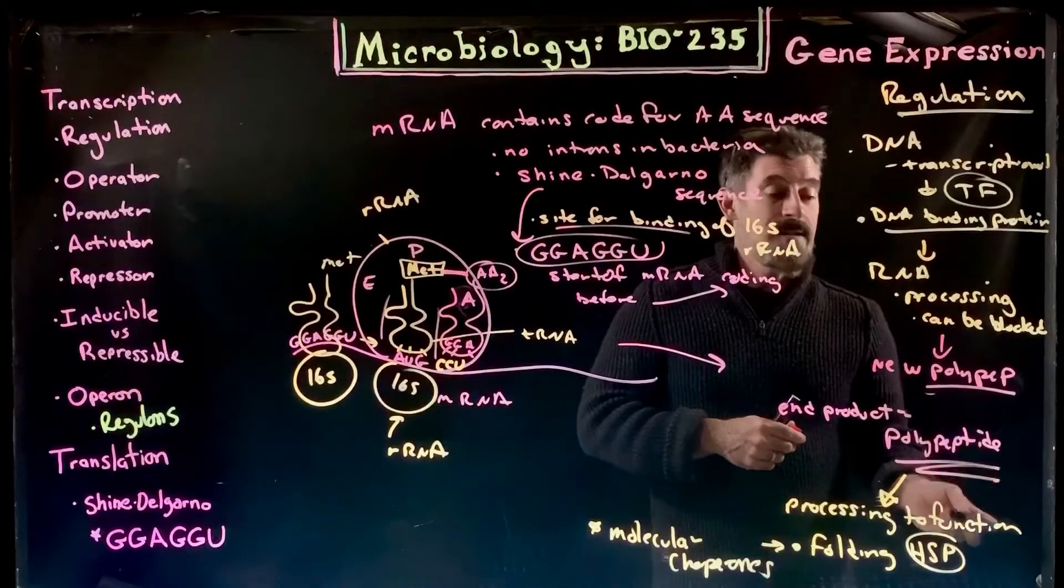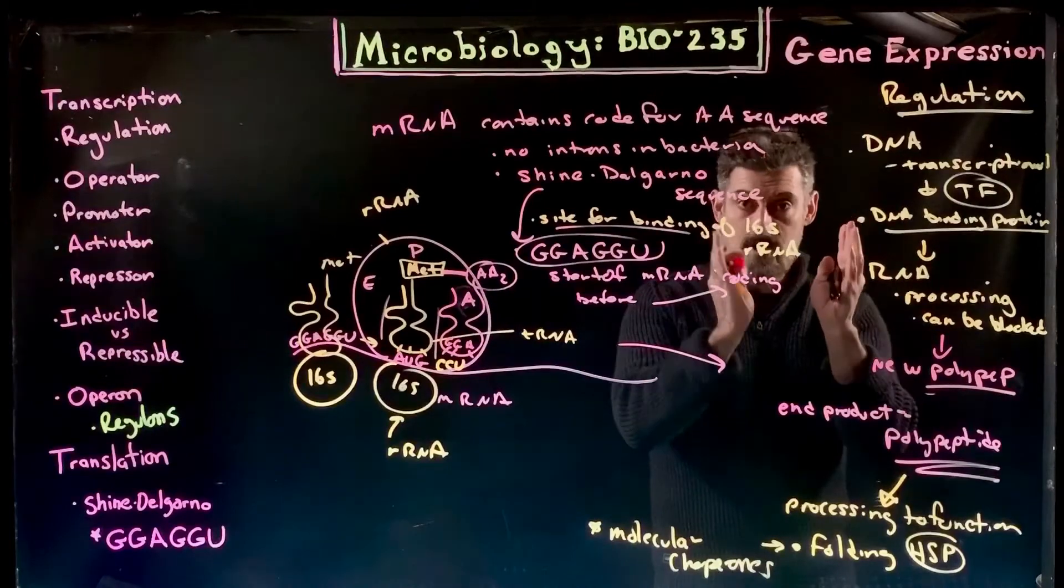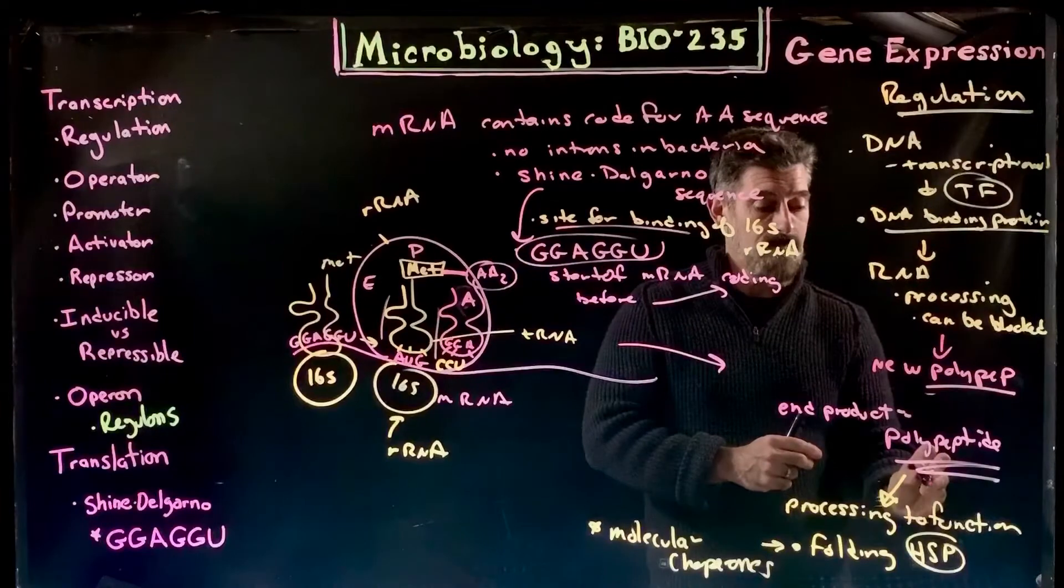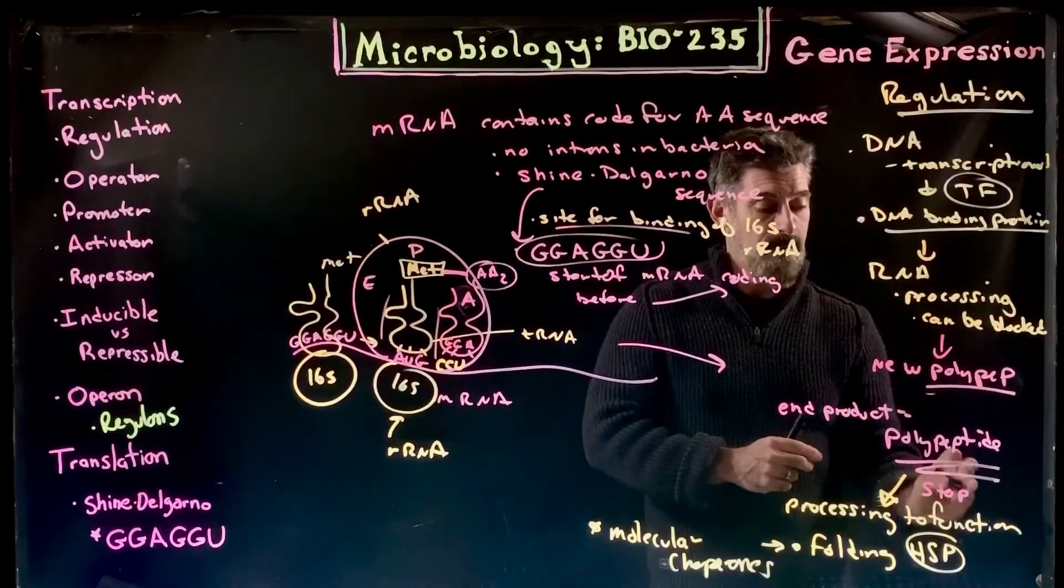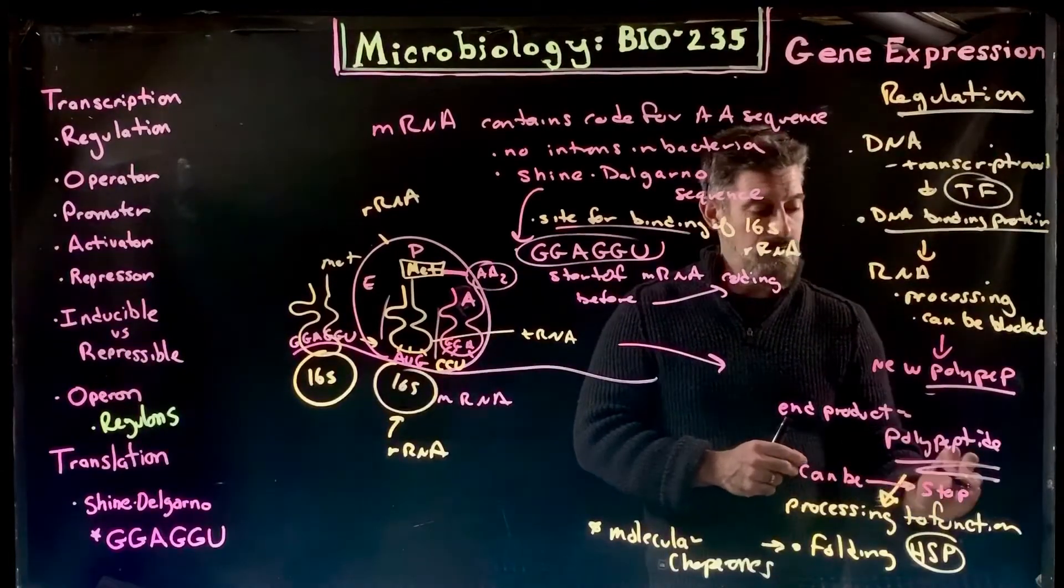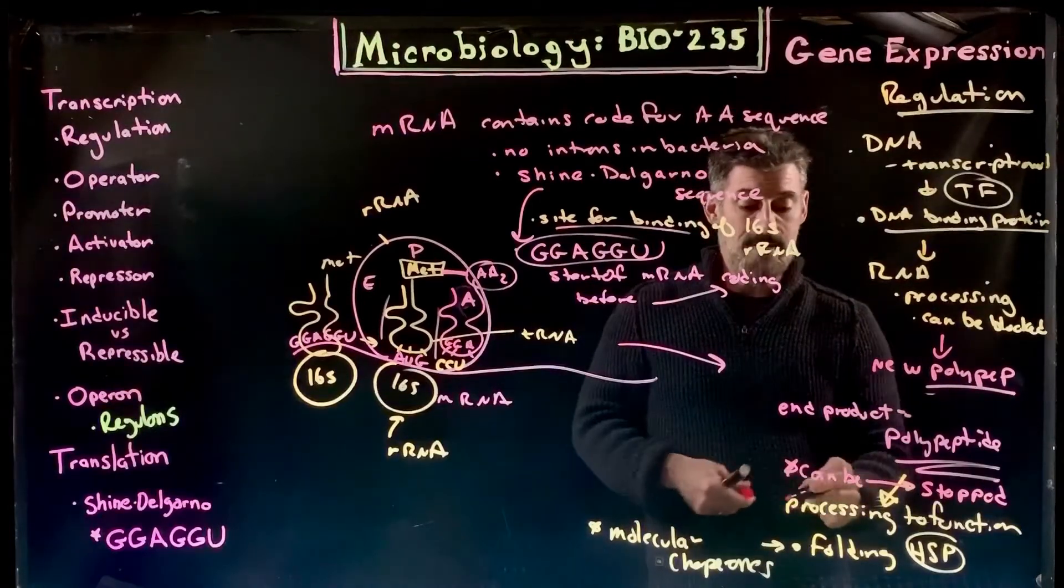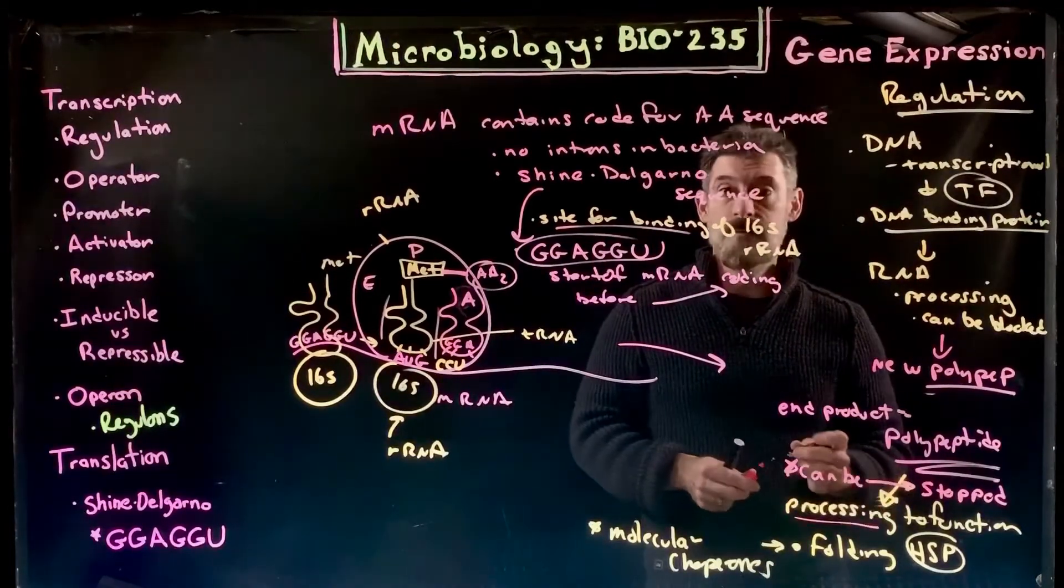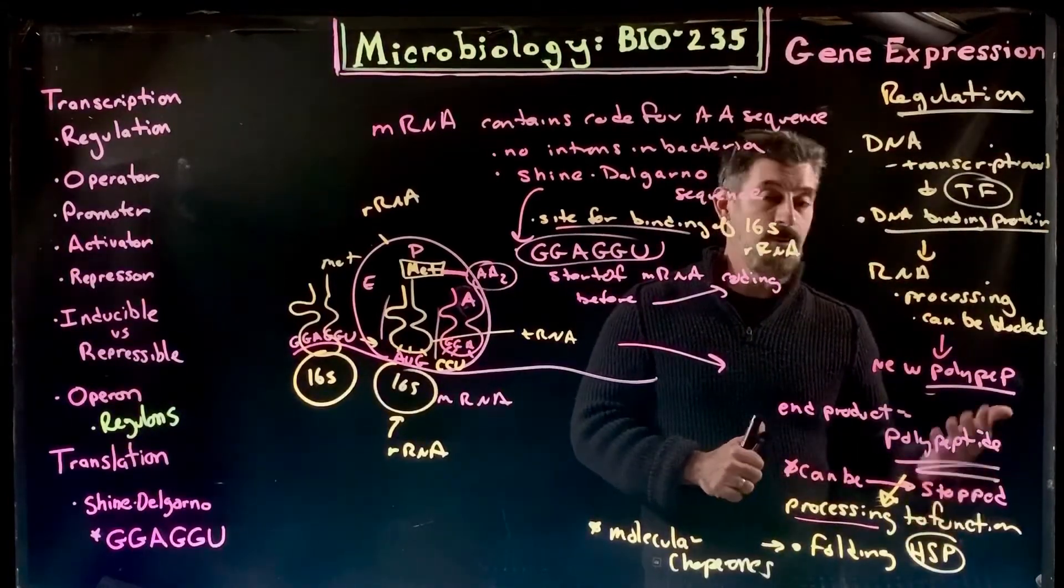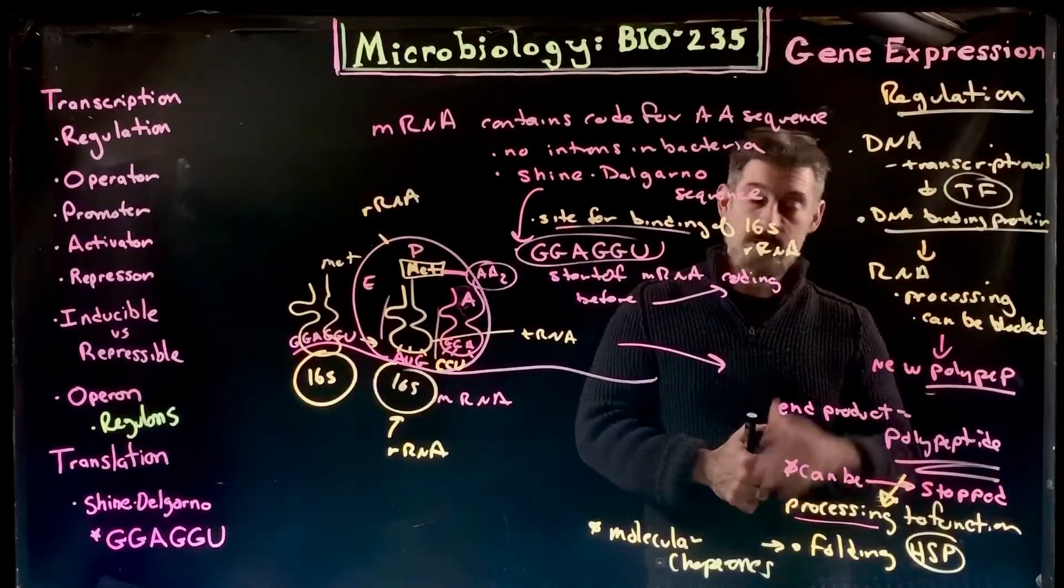If that works and we actually get the information read and everything comes together and we make the new polypeptide, we just said it's typically not functional. You can copy the DNA into RNA, you can then actually use that RNA to make a polypeptide, but actually at this point we can stop it here. We might stop the processing to function. It might inhibit the molecular chaperones from being able to fold those polypeptides into their proper form, and then that protein isn't expressed.